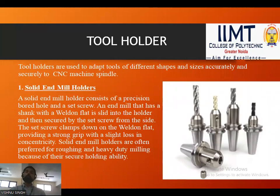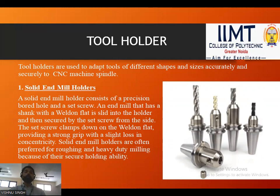Now let's look at the various types of tool holders employed in a CNC machine. Tool holders are used to adapt tools of different shapes and sizes accurately and securely to a CNC machine spindle. The first is the solid end mill holder, which consists of a precision bored hole and a set screw. An end mill with a Weldon flat shank is slid into the holder and secured by the set screw, which clamps down on the flat providing a strong grip with a slight loss in concentricity. Solid end mill holders are preferred for roughing and heavy-duty milling.